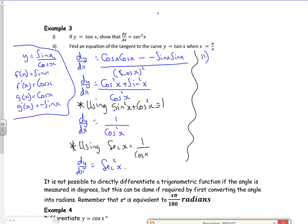All right, part two. Find the equation of the tangent y equals tan x when x is pi by four. So in terms of a plan, I need a gradient, so I need dy by dx evaluated when x is pi by four, and I need y when x is pi by four, and then I'm just going to put it into y minus y one is m x minus x one.